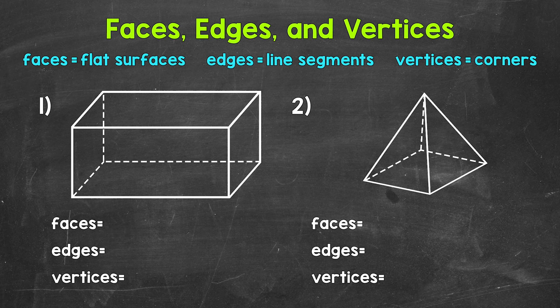Let's jump into our examples and see exactly what faces, edges, and vertices look like. We will identify and count the number of faces, edges, and vertices for both of our examples. Let's take a look at number 1, where we have a rectangular prism.